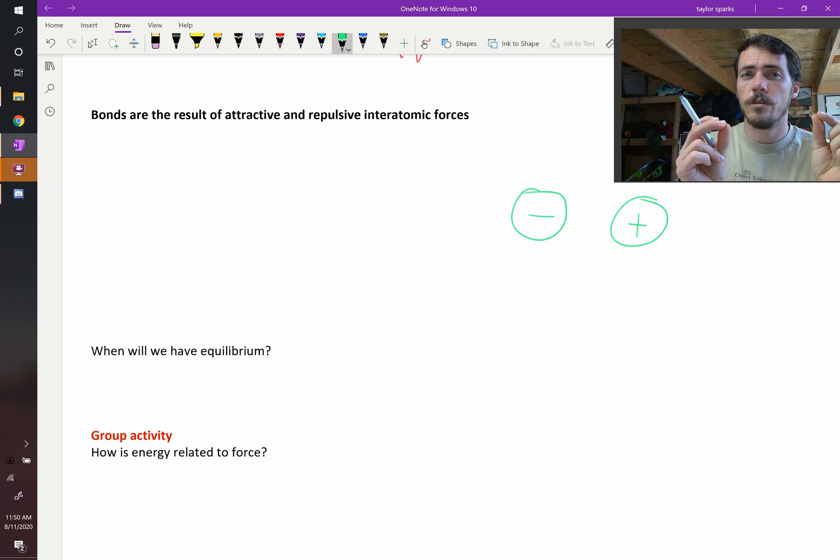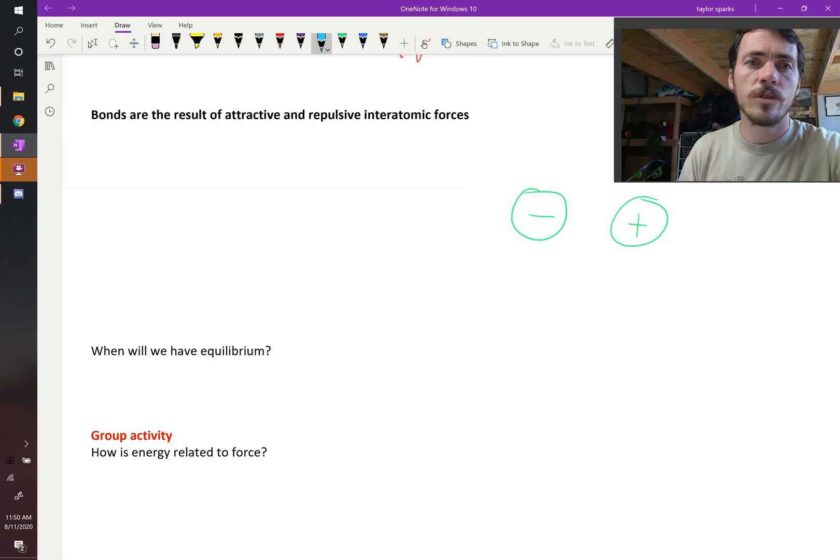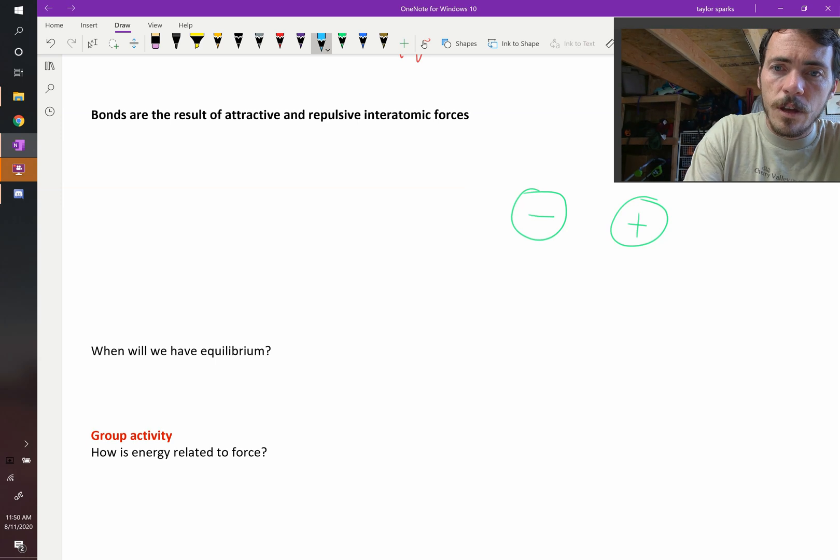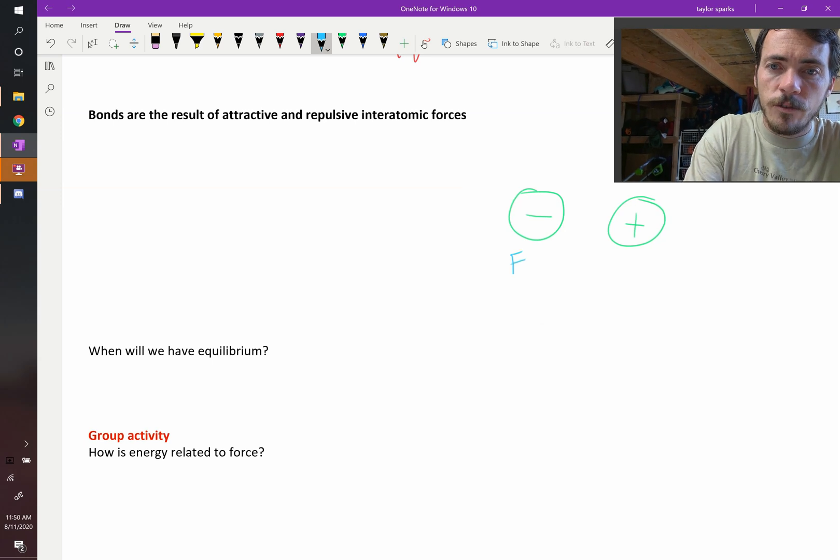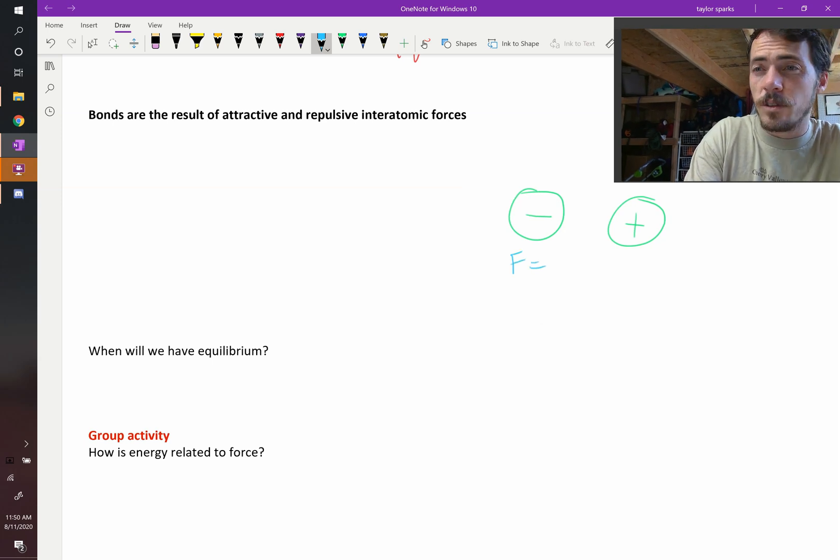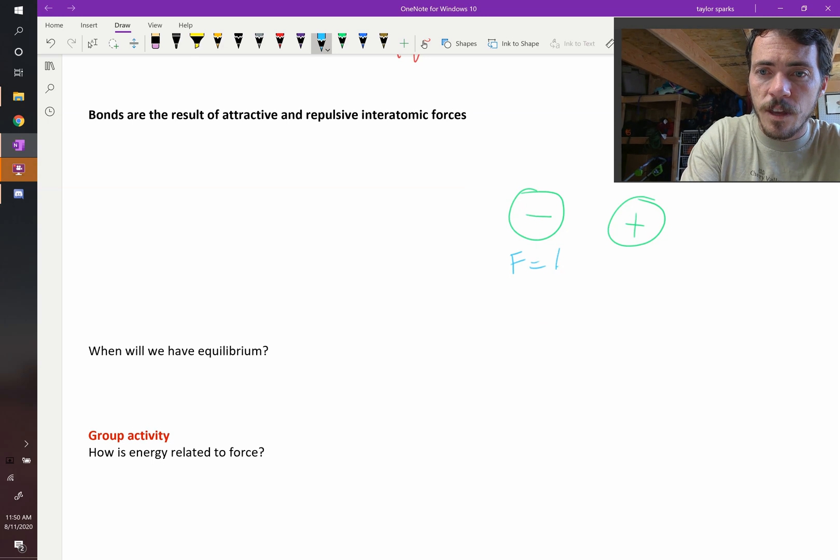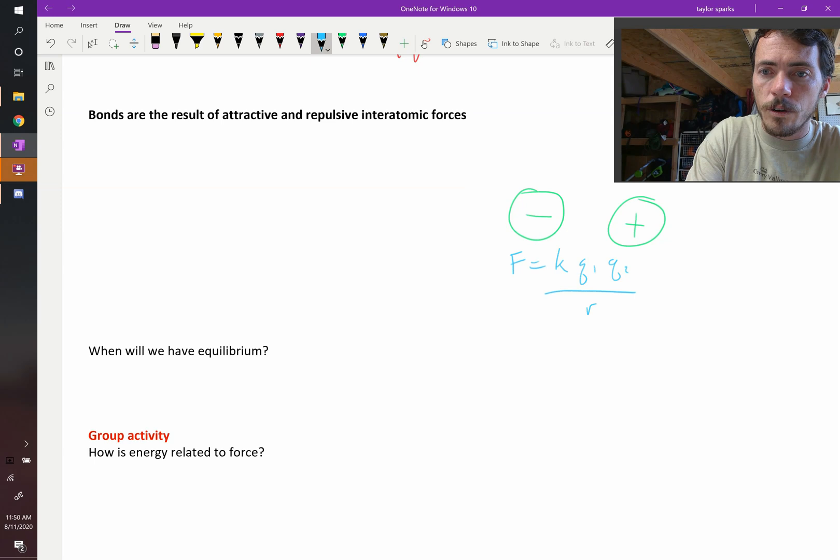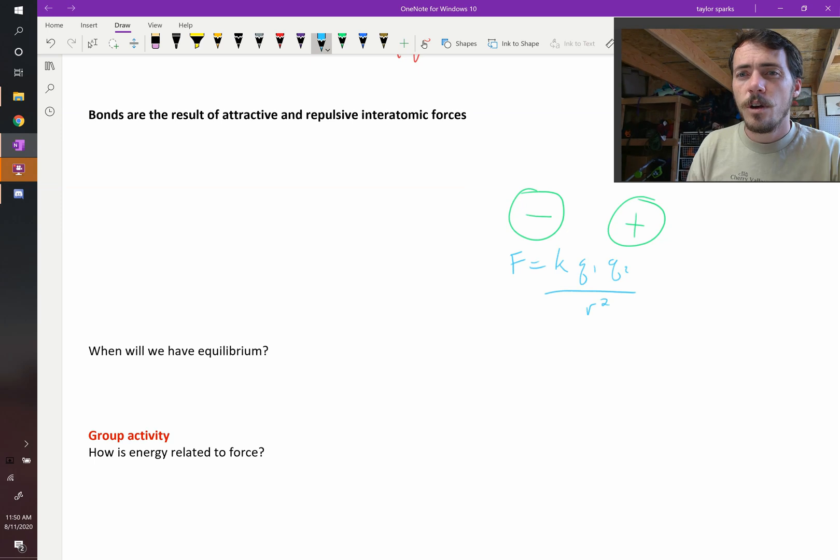So if they attract each other, what was that force given as? The force, the attractive force, was equal to—depends on your textbook but it probably looks something like this: k, and then maybe q1 q2 over r squared. Does that look familiar?